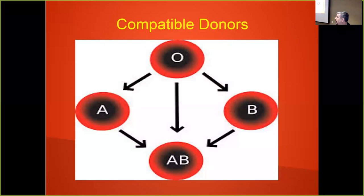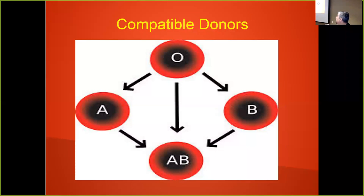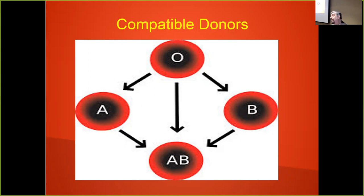We all know the Punnett square version of who's compatible with whom, but I actually prefer the version that shows the universal donor at the top, the universal recipient on the bottom, and all arrows point down. It's actually a little easier. This becomes important because later I'm going to talk about plasma compatibility the same way.